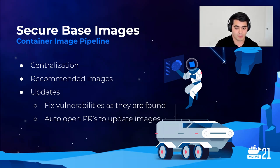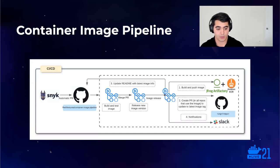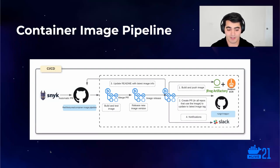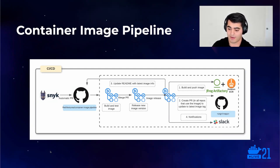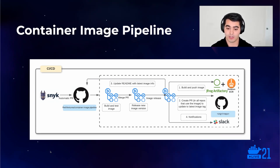To give you a visual of the actual pipeline: we have the central GitHub repository with a container image pipeline leveraging Snyk for monitoring. Whenever vulnerabilities are detected, it will merge that PR, release the new image, push it into ECR and Artifactory — which is what we use here at RV — and then create those PRs on different repositories to update the previous vulnerable images and notify the teams.